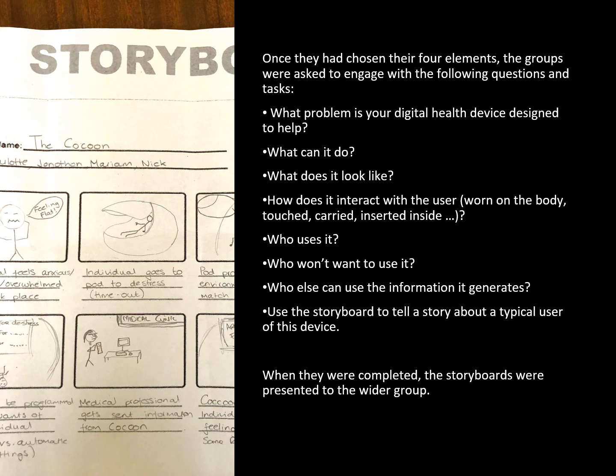Once they had chosen their four elements, the groups were asked to engage with the following questions and tasks: What problem is your digital health device designed to help? What can it do? What does it look like? How does it interact with the user — is it worn on the body, touched, carried, inserted inside? Who uses it? Who won't want to use it? Who else can use the information it generates? Use the storyboard to tell a story about a typical user of this device.